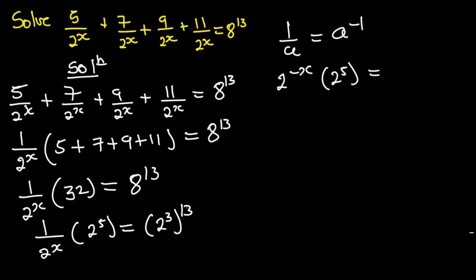So 2 to the power negative x multiplied by 2 to the power 5 is equal to — 3 times 13 gives 39 — so 2 to the power 39. Since we are multiplying numbers with the same base, we add the exponents, giving 2 to the power negative x plus 5 equals 2 to the power 39.